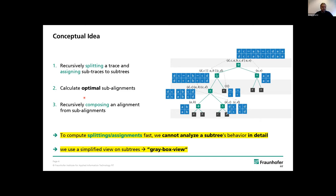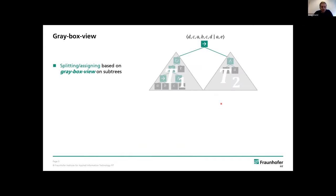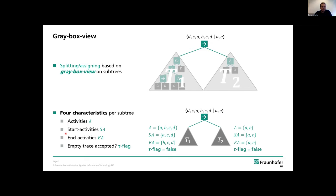When computing these splittings and assignments fast, we cannot analyze the full subtree behavior because it would be too time-consuming. Therefore we use a simplified view on a subtree called a gray-box view. For each subtree we compute four characteristics: the set of activities, the set of start activities, the set of end activities, and whether the empty trace is accepted (the tau flag).